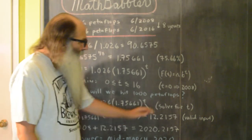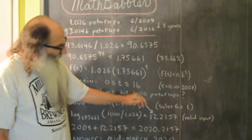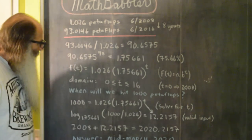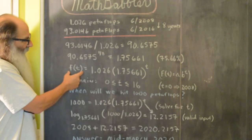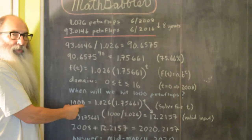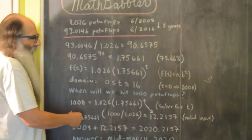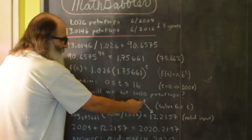So now we're prepared to answer our question, when will we hit a thousand petaflops? Well, we replace f of t, the output, with what we're looking for 1000. And now we have to solve for t.